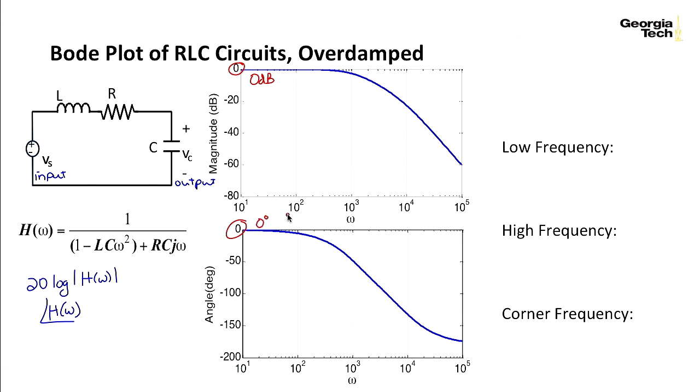What happens at high frequency? At high frequency, I have a slope here, and that slope is minus 40 dB per decade. Remember with the RC circuit, it was minus 20 dB per decade. This is what we consider a second order circuit, and it has twice that slope.